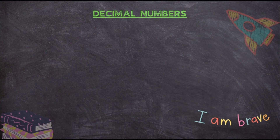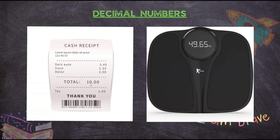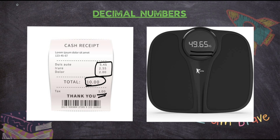Hello kids, welcome to the class. Today we are going to learn about decimal numbers. Whenever you went for any shopping, you must have seen numbers popping up on your shopping bill — like 5.45, 2.55, 2.00, and 10.00. Similarly, when you check your weight, you see numbers like 49.65 or 50.01. These numbers are called decimal numbers. When you see a number like 4.53, this point is known as the decimal point.